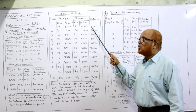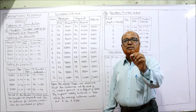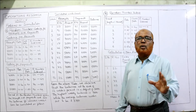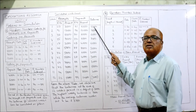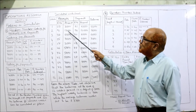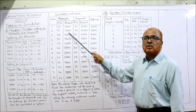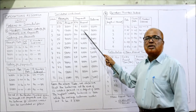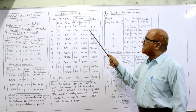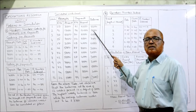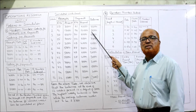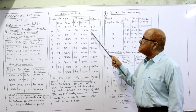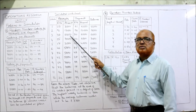The closing balance of week one (5,000) becomes the opening balance of week two. In week two, receipts are 12,000, so 5,000 plus 12,000 equals 17,000. Payment is 10,000, so 17,000 minus 10,000 equals 7,000 closing balance. In week three, opening balance is 7,000, receipts are 5,000, giving 12,000 total; minus payment of 6,000 equals 6,000 closing balance.